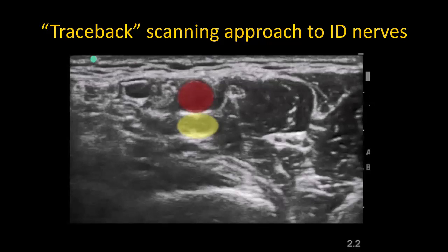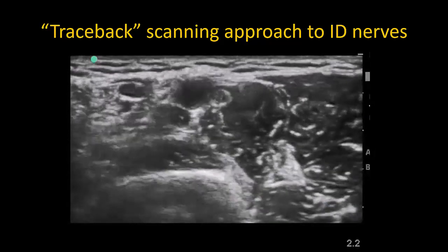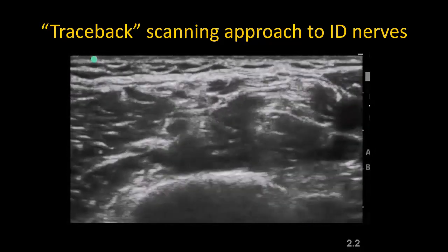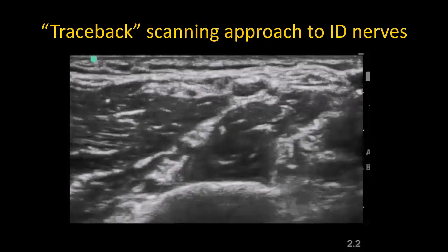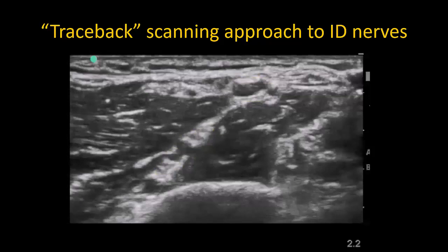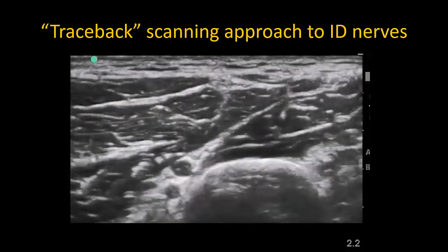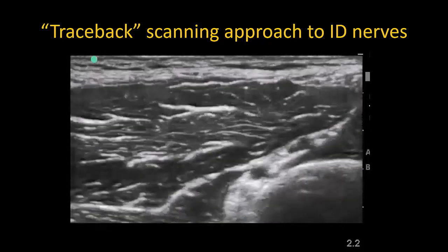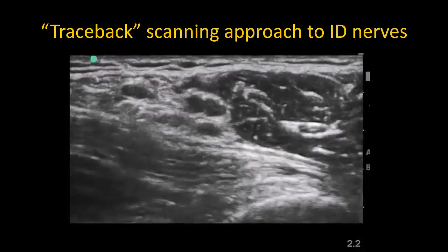As we scan more distally, the median nerve slides around the artery onto its medial side but always stays adjacent to the artery. The ulnar nerve lies more medial and separate from the artery under the investing fascia. The radial nerve is also visible, sliding towards the posterior humerus between the heads of triceps. The radial nerve can be followed proximally to confirm its location on the conjoined tendon. Now the identity and location of all four main nerves can be confirmed.